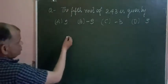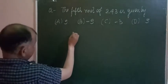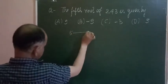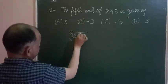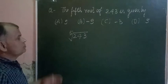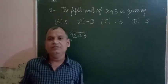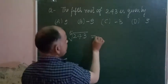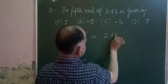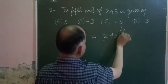In this question, fifth root means 5, so we want to find the fifth root of 243. We can write this as 243 to the power 1 upon 5.